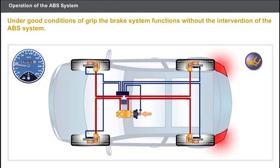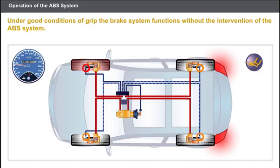Under conditions of good grip and during normal braking, the brake system operates without the intervention of the ABS system. However, during emergency braking, one or several wheels may lock. The computer monitors the acceleration and deceleration speeds of the wheel via the sensors. If braking regulation becomes necessary, the computer sends a command to the solenoids and activates the pump.